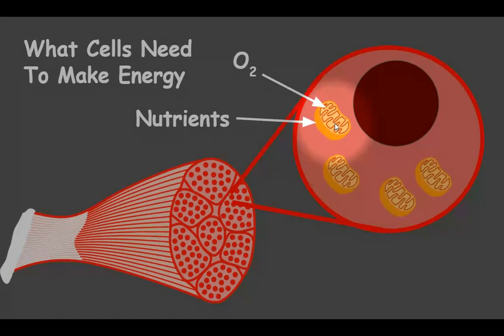And what does it need for energy? It needs oxygen and nutrients. So it combines oxygen with nutrients to make energy for the cell, it makes ATP.